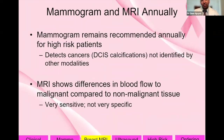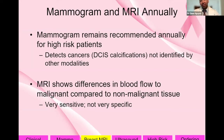Why still do mammogram if MRI is more powerful? MRI may not detect calcifications, and calcifications can represent DCIS — stage zero early cancer. MRI shows differences in blood flow to malignant versus non-malignant tissue; it's very sensitive but not very specific. So it can catch cancers but also call back benign findings, leading to more biopsies. That's why we don't use it on every patient, but it's well worth it for high-risk women.